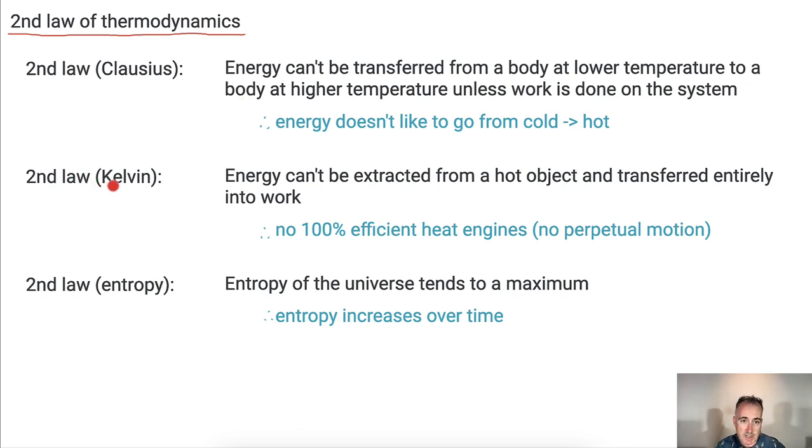The Kelvin version of the second law is that energy can't be extracted from a hot object and transferred entirely into work. What it really means is that there's no such thing as a heat engine that's 100% efficient. You can't have perpetual motion. There's always some losses due to friction and other things.